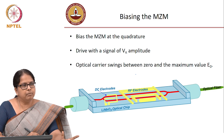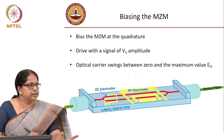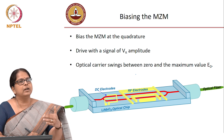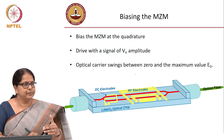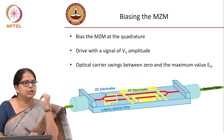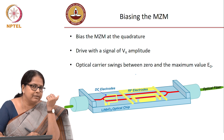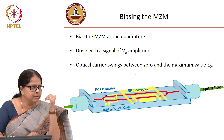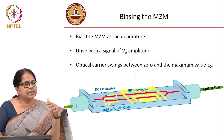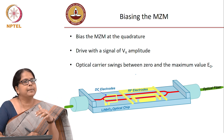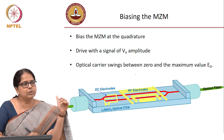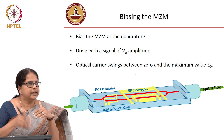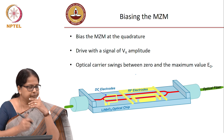So, how do you bias the modulator? You have to bias the modulator. You have what is called a bias T. We talked about bias T even when we were talking about direct modulation systems. Bias T is an inductor-capacitor circuit which will combine DC and AC.